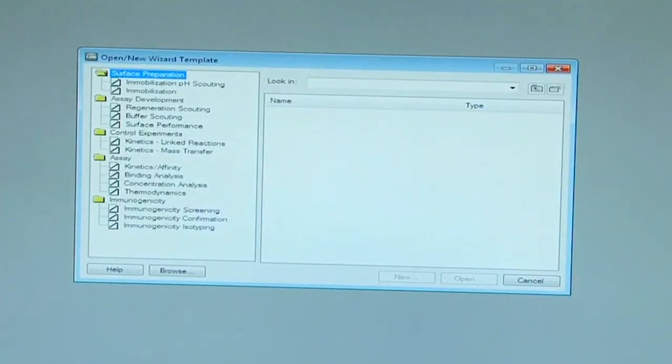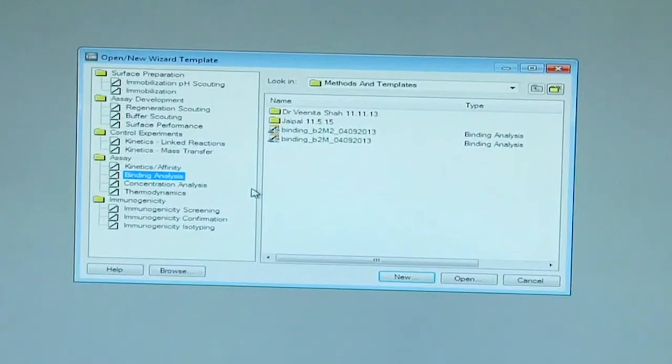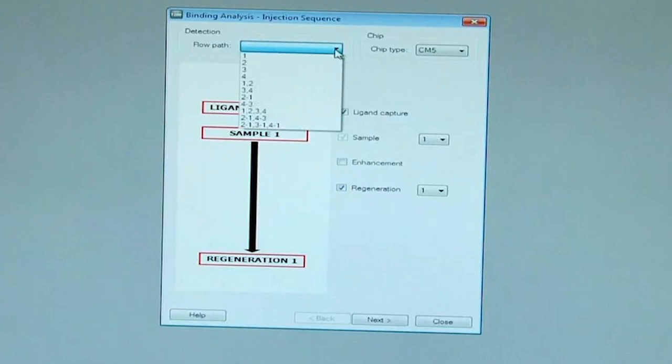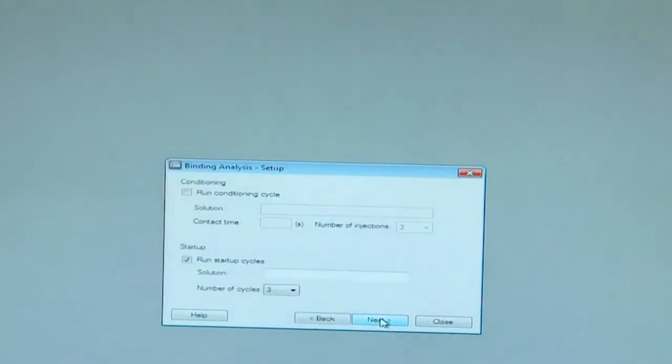File. Before making the template, we will open the file wizard again. Binding analysis. New. Identify the flow path as 2 minus 1 as we have done our immobilization on 2 minus 1. The chip will be CM5 that is docked already. We will not have ligand capture. Sample and regeneration. We will go to the next tab. Here, we are not using any conditioning cycle. We will start with the startup cycle.